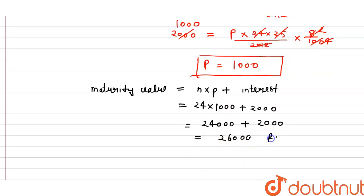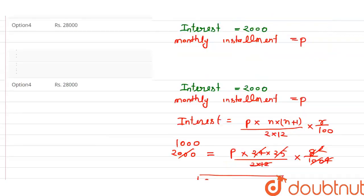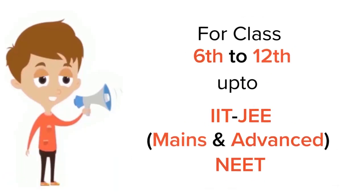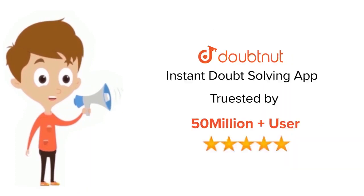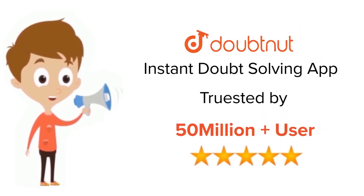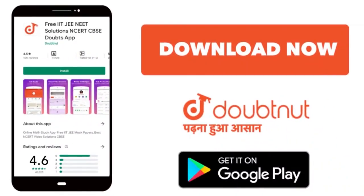The maturity amount is 26,000 rupees. Checking the options, option three is our right answer. For class 6 to 12, IIT JEE and NEET level, trusted by more than 5 crore students — download DoubtNet today.